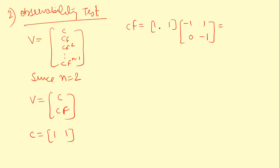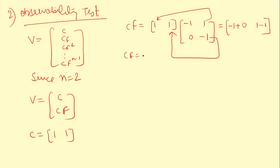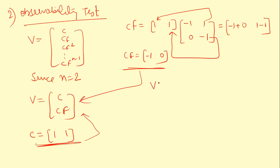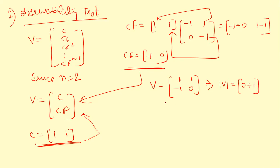Computing CF: C = [1, 1] multiplied by F = [-1, 1; 0, -1]. This gives: 1×(-1) + 1×0 = -1, and 1×1 + 1×(-1) = 0. So CF = [-1, 0]. The observability matrix V = [[1, 1], [-1, 0]]. Its determinant is 1×0 - 1×(-1) = 0 + 1 = 1, which is not equal to 0.